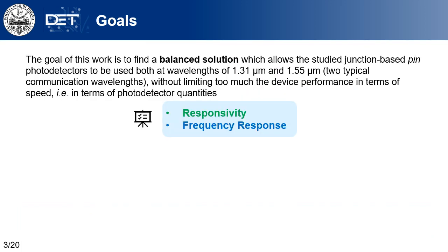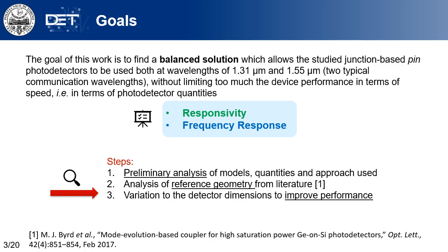In this framework, the goal of this work is to increase as much as possible the speed of an optical communication system at two typical communication wavelengths, namely 1.31 micrometers and 1.55 micrometers. An analysis of the responsivity and the frequency response of photodetectors has been done in three steps: first, a preliminary analysis of models, quantities, and approaches used; then, an analysis of reference photodetectors taken from the literature, specifically from an MIT paper of 2017; and finally, variations to the dimensions of the detector region to improve overall performance.